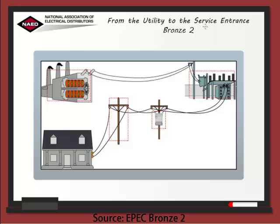Today we're going to talk about how we get power from the utility to the service entrance. Electricity is carried from the utility generating station to a pole transformer located outside. The power is transmitted over high voltage, low current lines.